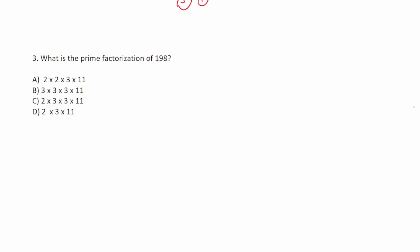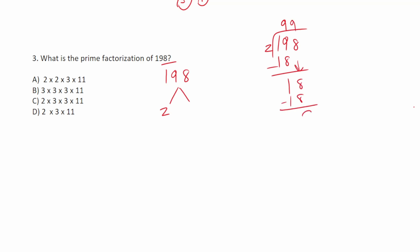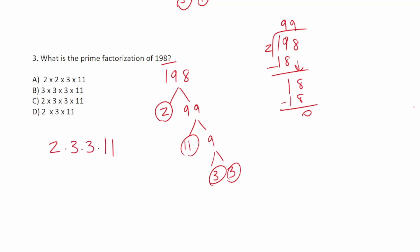Number 3 says: what is the prime factorization of 198? Since 198 ends in an even number, I know 2 goes into 198. Doing 198 divided by 2: 2 goes into 19 nine times, giving 18; 19 minus 18 is 1; drop down the 8; 2 times 9 is exactly 18. So 2 times 99 is 198. Continuing to break down 99: that's 11 times 9, and 9 is 3 times 3. So the prime factors are 2, 11, 3, and 3. The prime factorization is 2 times 3 times 3 times 11, which is answer choice C.